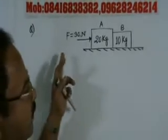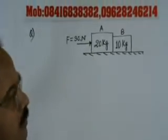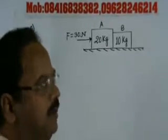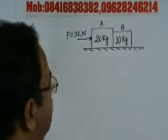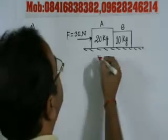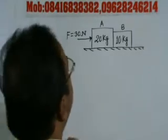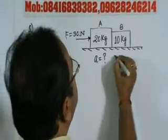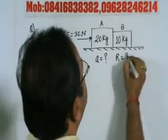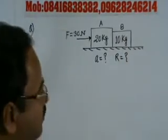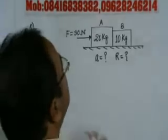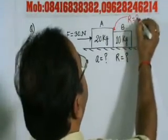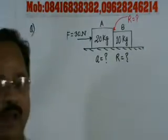In the arrangement shown in the figure, the surface is smooth. Find the common acceleration of each block and the reaction at the contact surface. We have to find the common acceleration — what will be the value of A, the common acceleration? And what will be the reaction at the contact surface? This point of reaction will be related to R, and we need to calculate the R value for the problem.